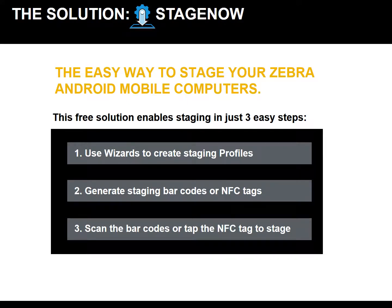First of all, you could use step-by-step wizards provided through the tool to create your profiles. This makes it really simple and eliminates the possibility of errors when creating your staging profile. Once your profiles are created, you could generate staging barcodes and NFC tags. And lastly, take your devices out of the box and scan the NFC tag or the barcodes to stage your devices.